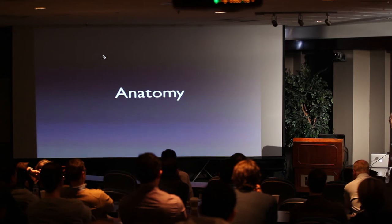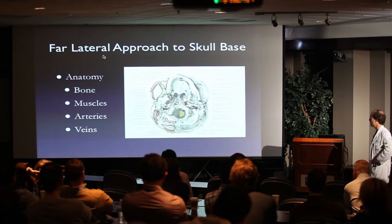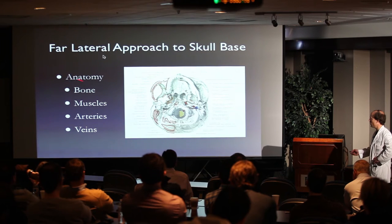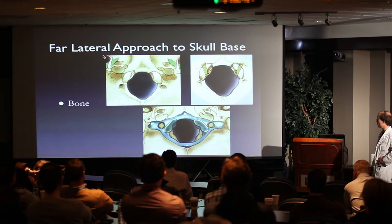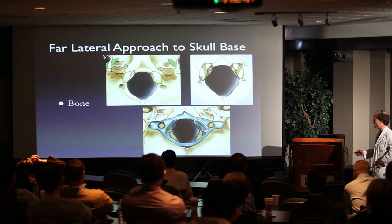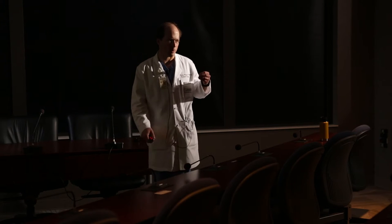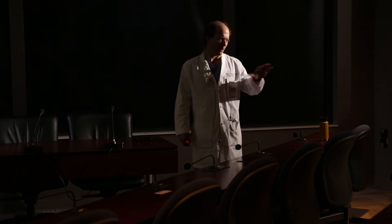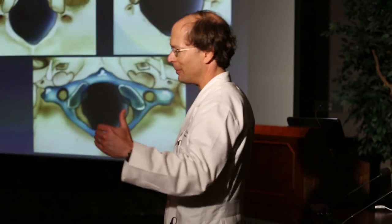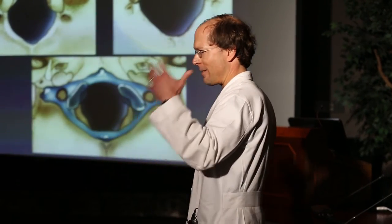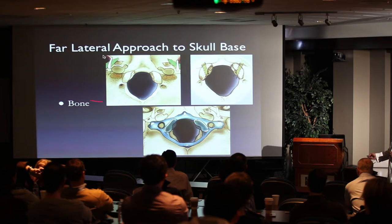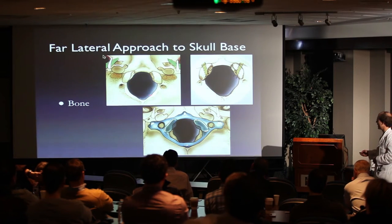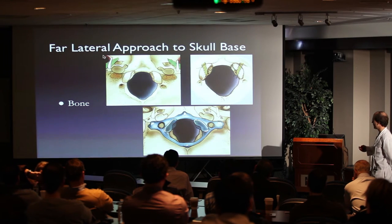Looking at any skull base approach, you have to hammer home the anatomy to really understand how to do these procedures. We're going to review the bone, the muscles, the arteries, and the veins. Looking at the bone, you want to understand the occipital condyle. Most people starting out would say it's in the middle, but they're really in the anterior third of the foramen magnum, as you can see right here. The other thing to understand is where the hypoglossal canal is relative to the occipital condyle.